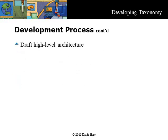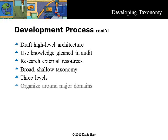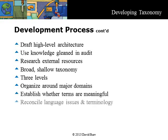Draft a high-level architecture using knowledge gleaned in the audit and from research and external resources. Develop a broad, shallow taxonomy with no more than three levels, organized around major domains. Don't develop for low-level parts of the business. Establish whether terms are meaningful and reconcile language issues and terminology. Balance the taxonomy and metadata — this is where art comes into play. In the absence of consensus, create a thesaurus, but note that planned applications might not support a thesaurus.